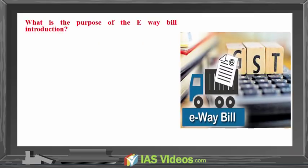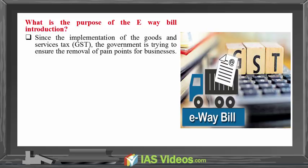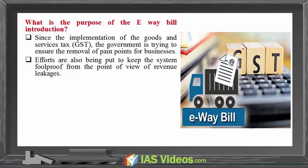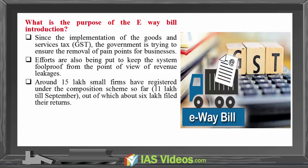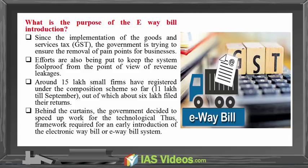What is the purpose of the E-Way Bill introduction? Since the implementation of the Goods and Services Tax, the government is trying to ensure the removal of pain points for businesses. Efforts are also being made to keep the system foolproof from the point of view of revenue leakages. Around 15 lakh small firms have registered under the Composition Scheme, out of which about 6 lakh filed their returns. Behind the scenes, the government decided to speed up work on the technological framework required for an early introduction of the Electronic Way Bill, or E-Way Bill system.